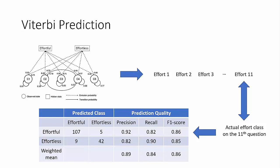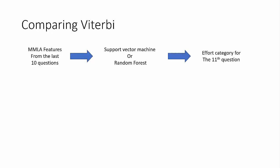To prove this point, we said, let's compare the Viterbi with two of the most common prediction algorithms used in educational data mining and LAK. Let's take the multimodal features from last 10 questions, feed them into support vector machine and a random forest separately. And we predict the effort category for the 11th question. We did a training validation and testing setup. But here we are cheating on this case, because the HMM has information of the previous effort category.